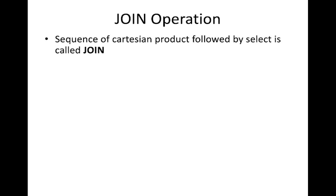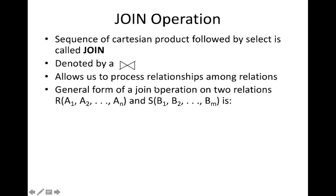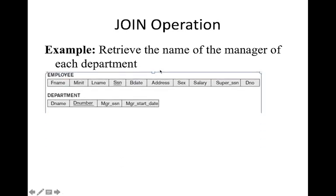Another important operation is the join operation. It is a sequence of Cartesian product followed by a select operation, denoted using a symbol that looks like a railway symbol. It allows us to process relationships among relations. For example, if we have two tables and want to retrieve information present in both, we need to join those tables. The join condition equates attributes from both tables.